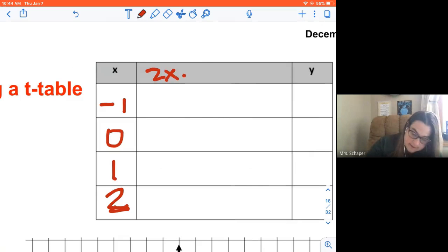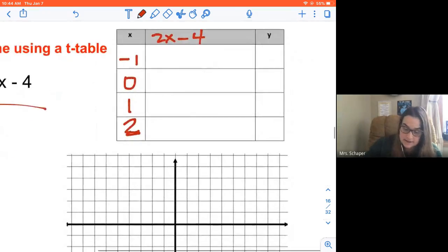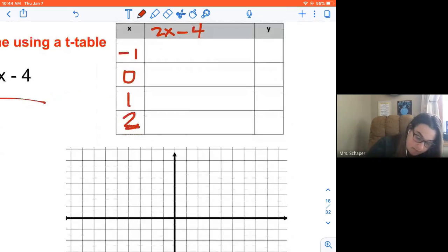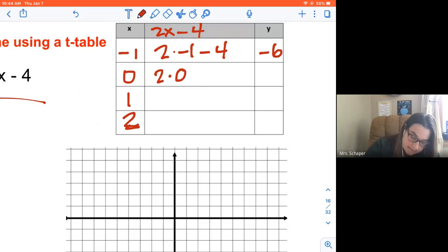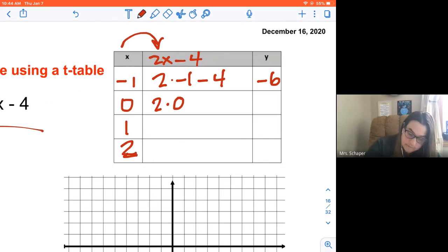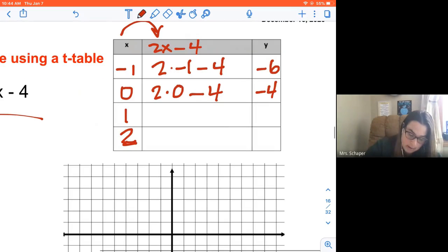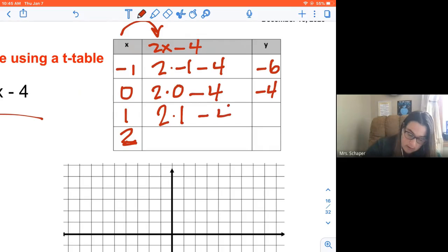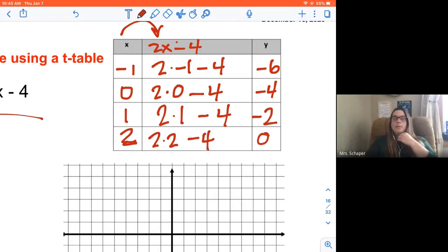So if x is -1, 2 times -1 minus 4 is -6. 2 times 0, so I'm putting my x value in for the x to figure out my y, 2 times 0 minus 4 is -4. 2 times 1 minus 4, 2 times 1 is 2 minus 4 is -2. And then I'm going to put 2 in for x, so 2 times 2 minus 4 is 0.